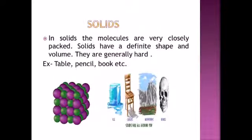First we will discuss about solids. Solids are generally hard — for example, a table or a chair. Solids have definite shape and definite volume. Because the molecules in solids are closely and tightly packed, they cannot move, and they have a strong force of attraction between them. So solid molecules are not free to move, which is why solids have definite shape and definite volume.